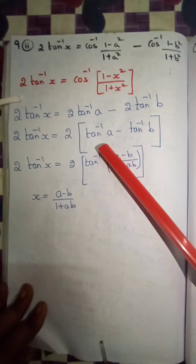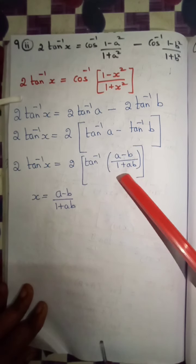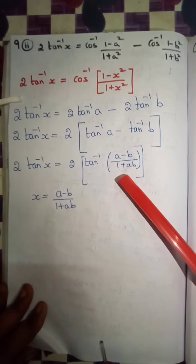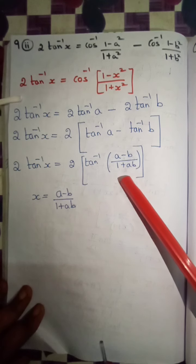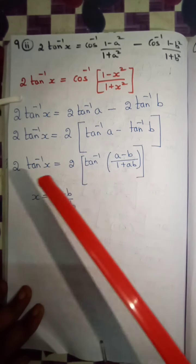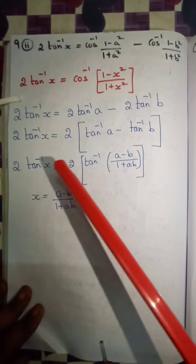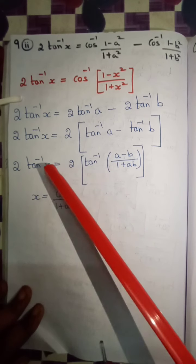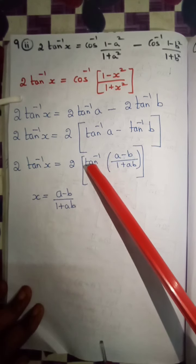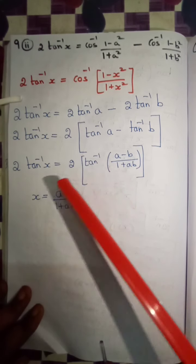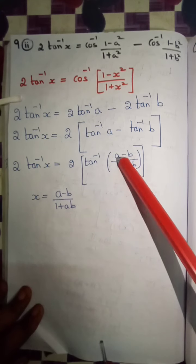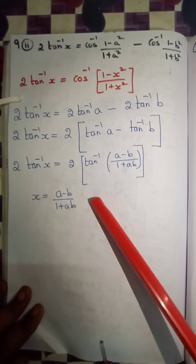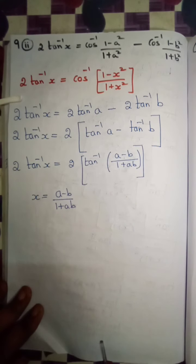Using the formula tan inverse of a minus tan inverse of b equals tan inverse of (a minus b by 1 plus ab), the 2 cancels and tan inverse cancels on both sides. So what remains is: x is equal to a minus b by 1 plus ab.